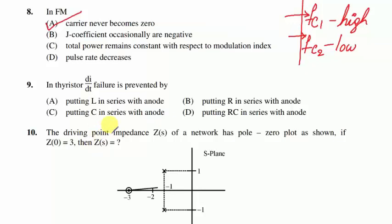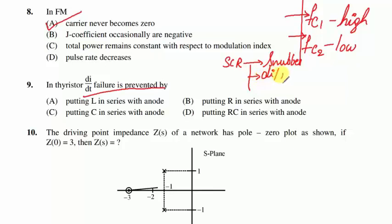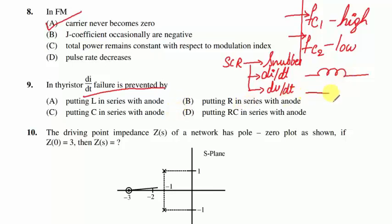Question 9 is based on power electronics: in a thyristor, di/dt failure is prevented by — in an SCR we have three types of protection: snubber circuit, di/dt protection (over-current protection), and dv/dt protection (over-voltage protection). For di/dt protection, an inductor is used so sudden change in current is not pumped into the device. For dv/dt protection, a capacitor is used — capacitors do not allow sudden change in voltage.